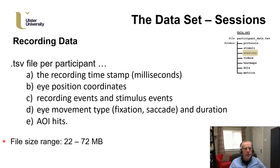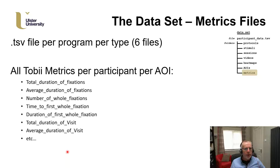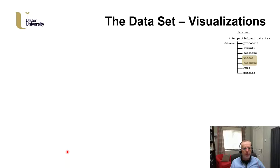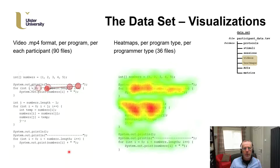For each program type we have made available the full set of Tobii metrics for each AOI. We also have some folders presenting visualizations: for each participant's gaze per program we have an .mp4 file showing the gaze plot. Then we have the averages presented as heat maps — fixation duration and counts per program type — also broken down into the dyslexia and the control grouping.